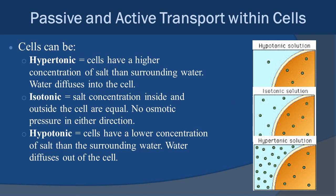When looking at cells generally, there are three possibilities. Hypertonic means the cell has a higher concentration of salts inside than the surrounding water, so water diffuses into the cell. Isotonic means salt concentrations inside and outside are about equal, with no net osmotic pressure. Hypotonic means the cell has a lower concentration of salt than the surrounding water, so water diffuses out of the cell.